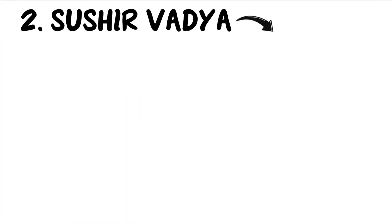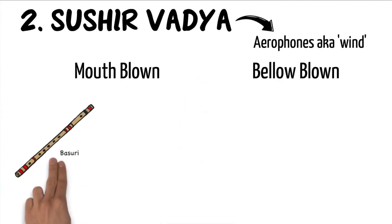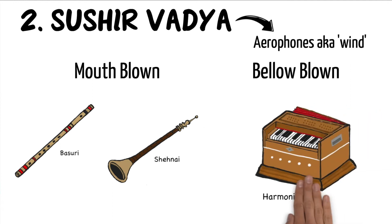Our second category is sushir vadya, also known as aerophones. This consists of wind instruments. Some wind instruments are mouth-blown, such as the Indian flute, also known as bansuri, as well as the shehnai. Some Indian instruments can be bellow-blown, such as the harmonium.